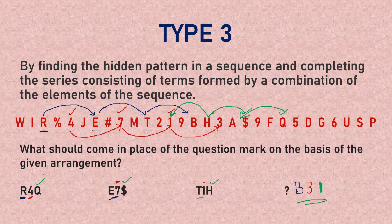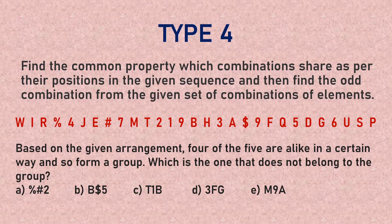That was Type 3 of questions on alphanumeric puzzles. In Type 4, we have to find a common property — meaning what property the combinations share — and then find the odd combination from the given set of elements. We have been given 5 combinations based on this sequence, and we have to find the odd one out.